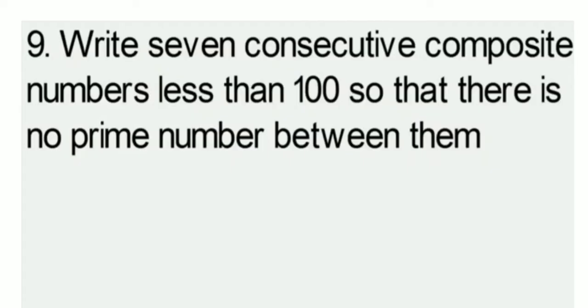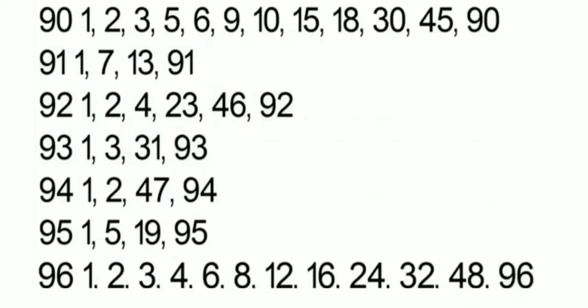Question number 9: write 7 consecutive composite numbers less than 100 such that there is no prime number between them. The 7 numbers are 90, 91, 92, 93, 94, 95 and 96. Consecutive composite numbers means there should be no gap and the numbers should all be composite. All 7 of these numbers have more than 2 factors, so they are consecutive composite numbers less than 100.